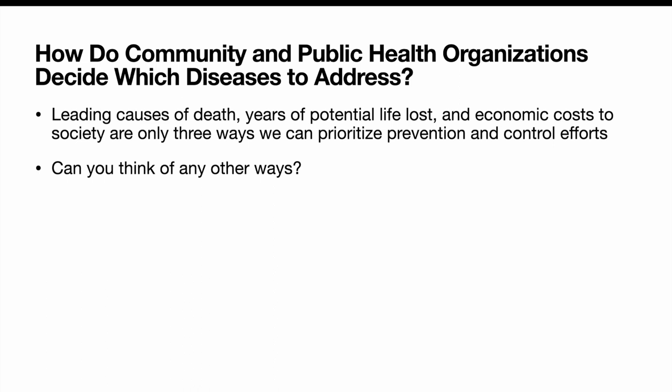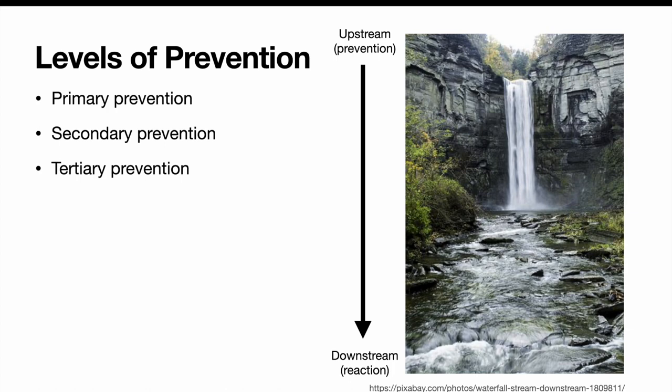So we can consider leading causes of death, years of potential life lost, and economic cost to society. Can you think of any other ways to prioritize which diseases or conditions to put our resources toward? When thinking about this, we also have to think about levels of prevention. There are different levels: primary prevention, secondary prevention, and tertiary prevention.